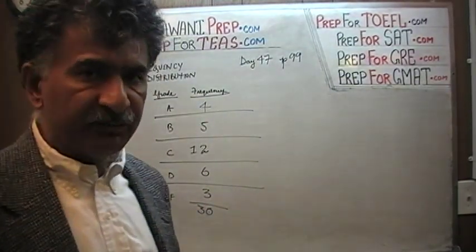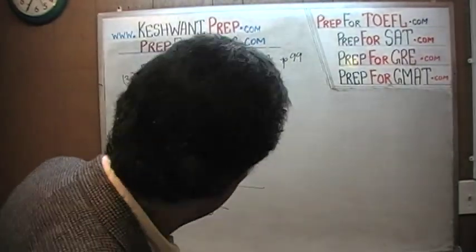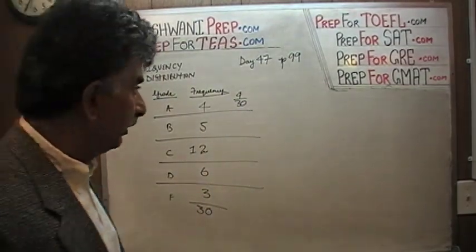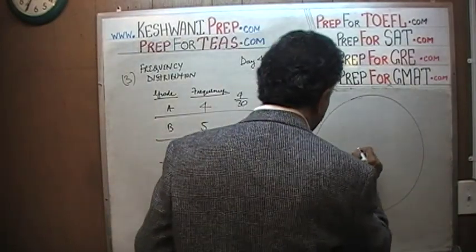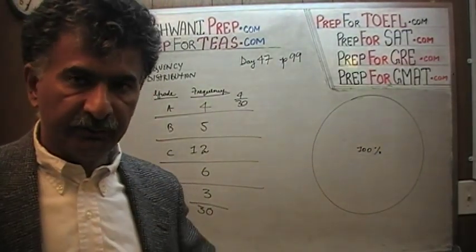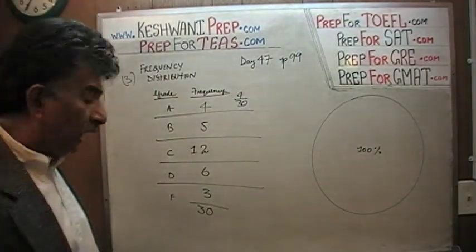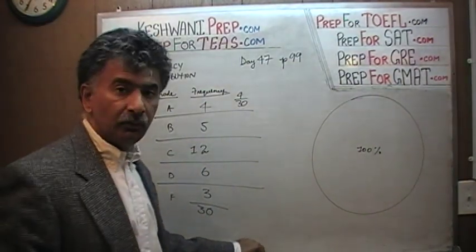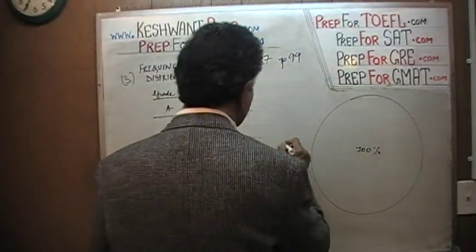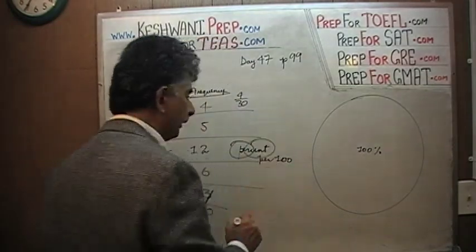The next thing we have to do is figure out the percentages for each of these categories — A, B, C, D, and F. How many A's do we have? A is 4 out of 30. Now, 4 out of 30 isn't enough by itself, because when doing a pie chart we have to show the distribution of grades in the area of the circle, which represents 100%. So we have to figure out the respective percentages. Pay attention here — 4 out of 30 is what percentage? Percent means per 100.